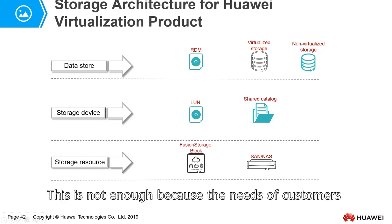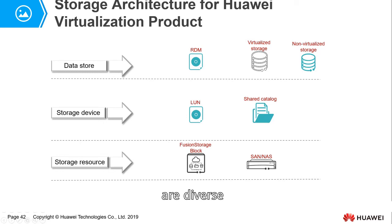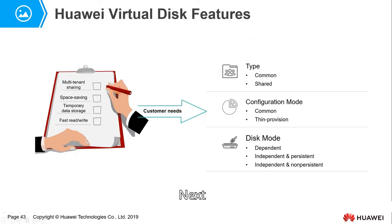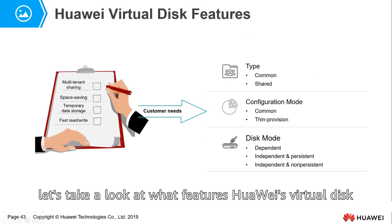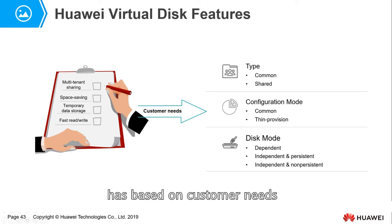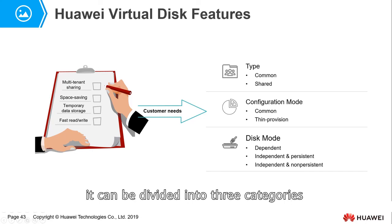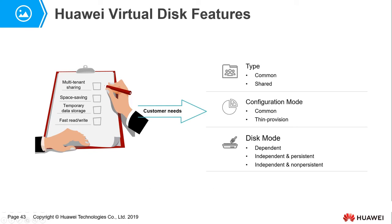This is not enough because customer needs are diverse. Let's look at what features Huawei's virtual disk has based on customer needs. These can be divided into three categories: the first is type, the second is configuration mode, and the third is disk mode.